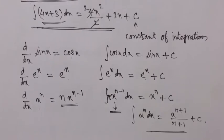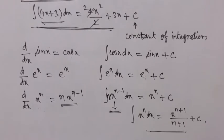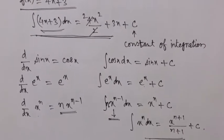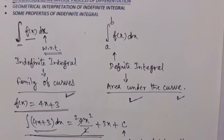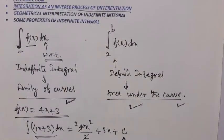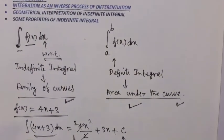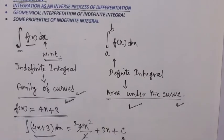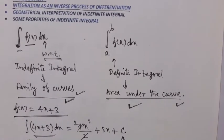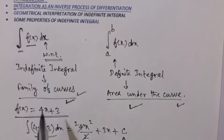This is the inverse process of differentiation. For the geometrical interpretation of the indefinite integral: what we just did gives a family of curves. That is the geometrical interpretation — the indefinite integral represents a family of curves.